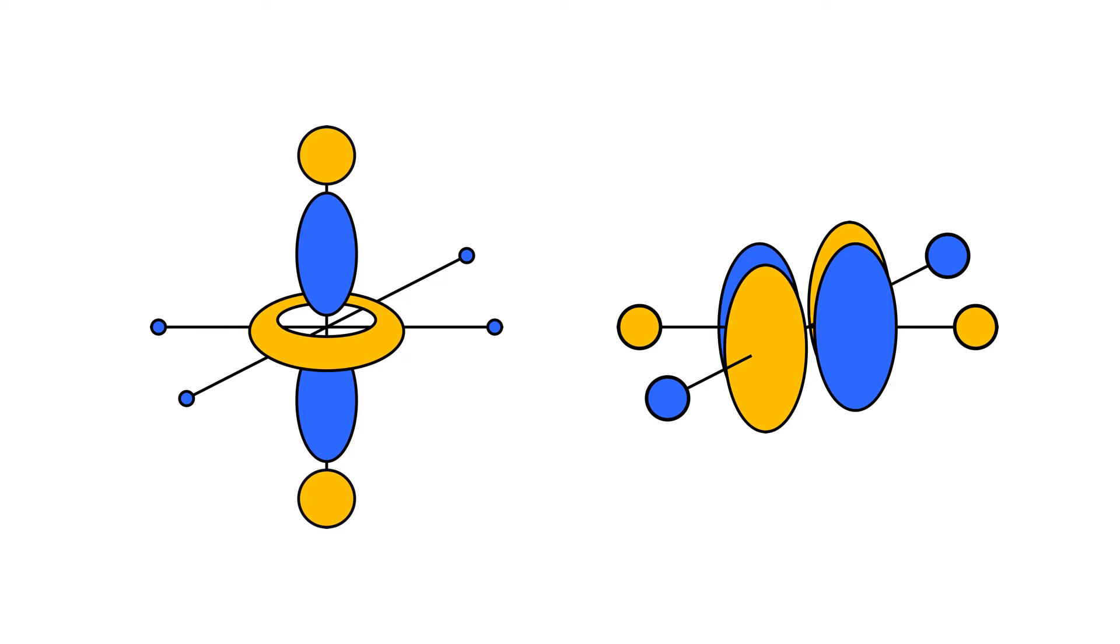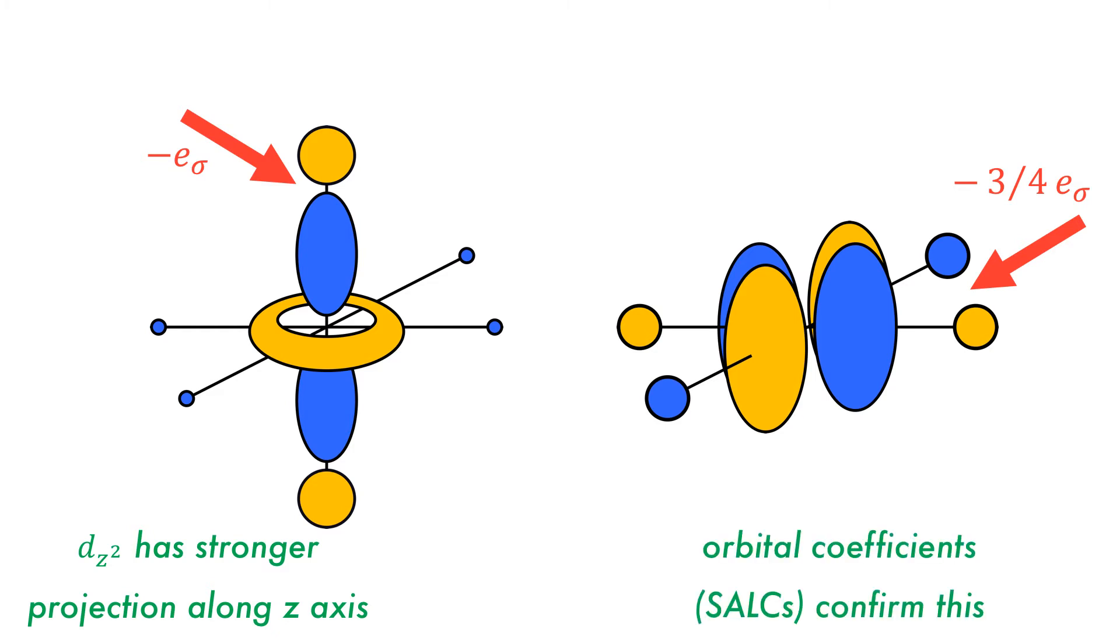Why is there a difference between these two interaction types? For the dz-squared, there is a stronger projection along the z-axis than the dx-squared minus y-squared orbital has along the x- and y-axis. In addition, the orbital coefficients of dz-squared are larger than the coefficients of the dx-squared minus y-squared.